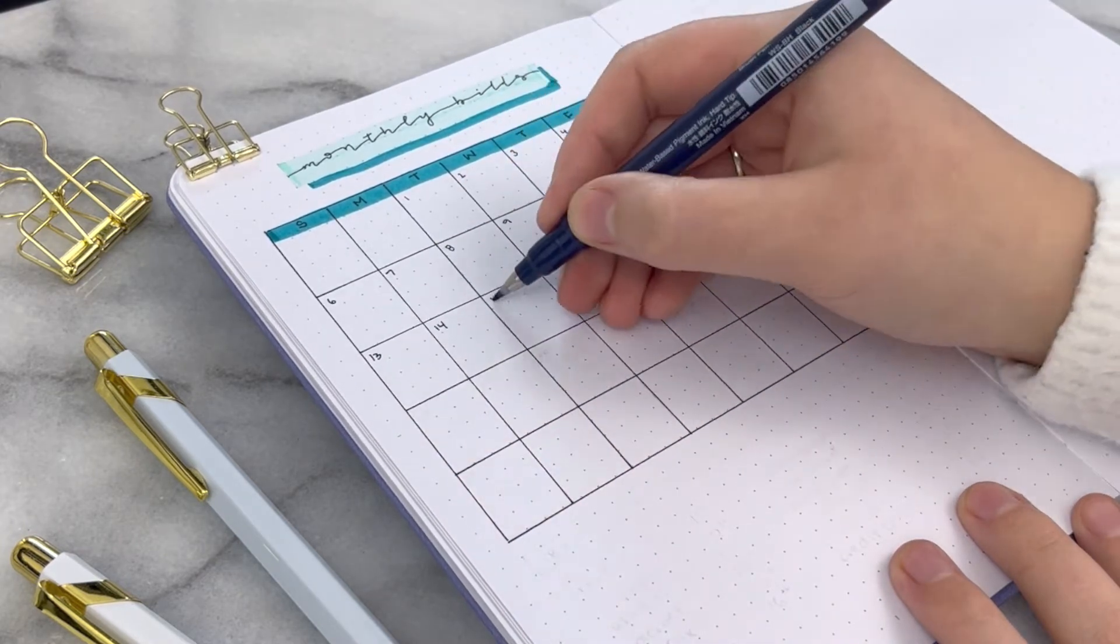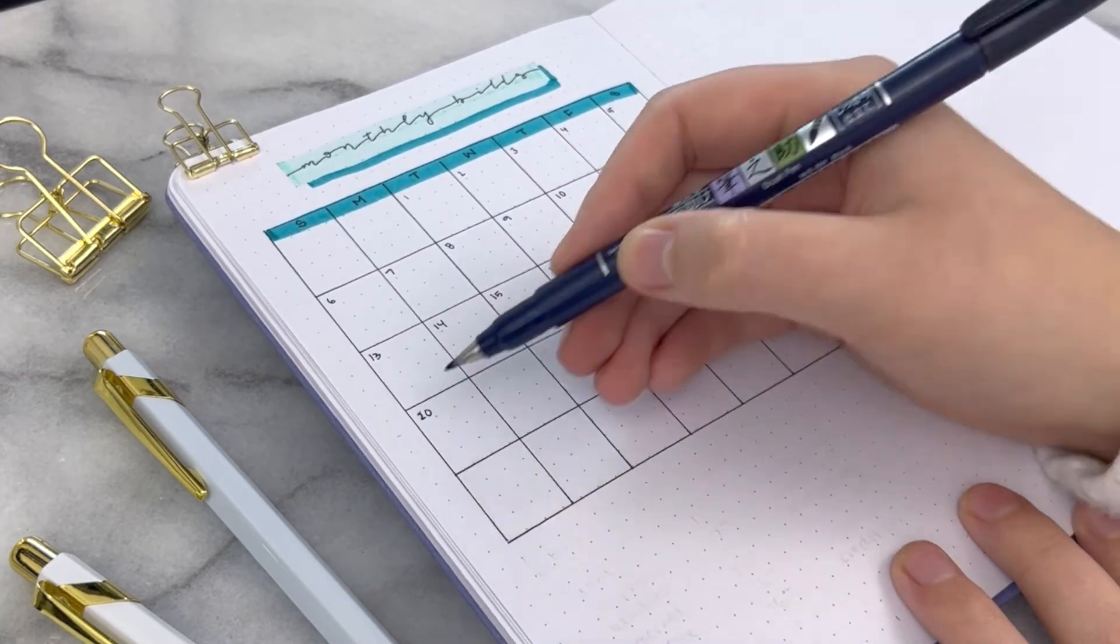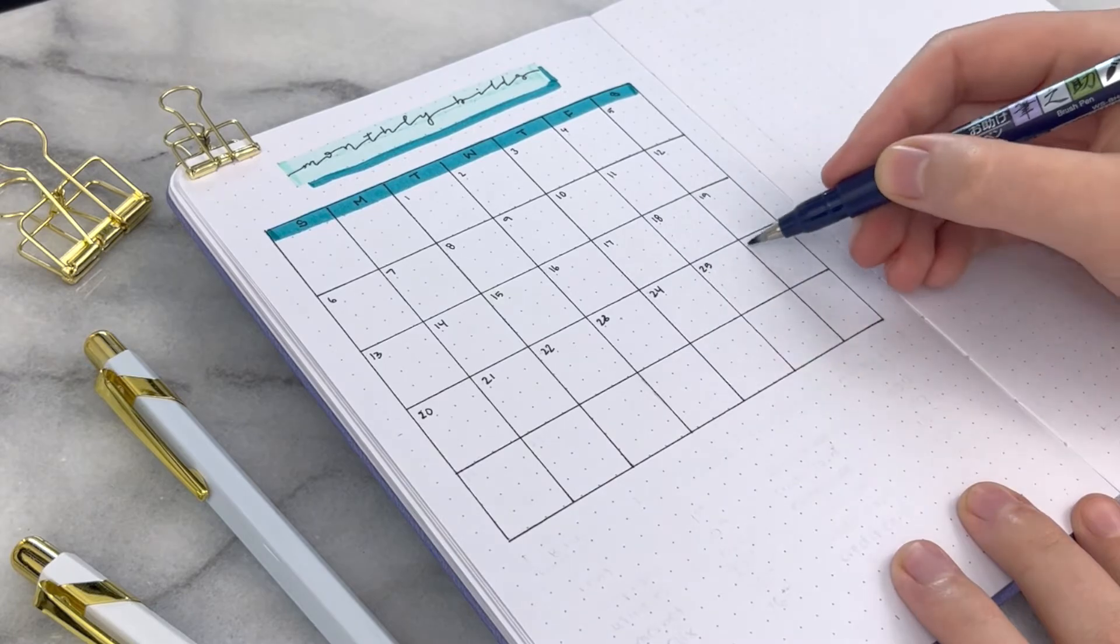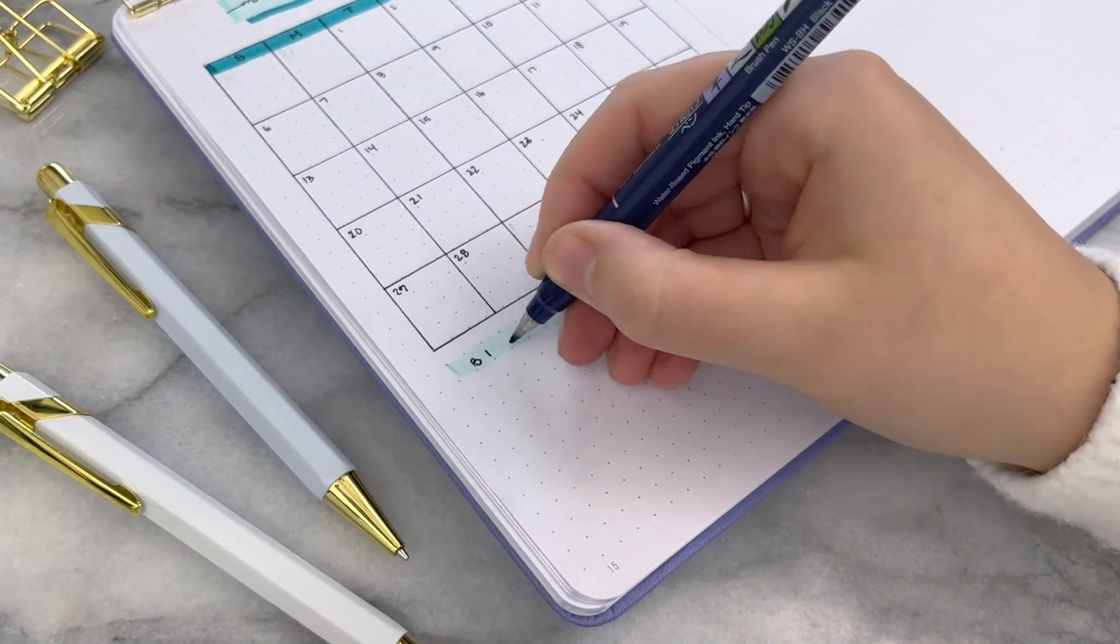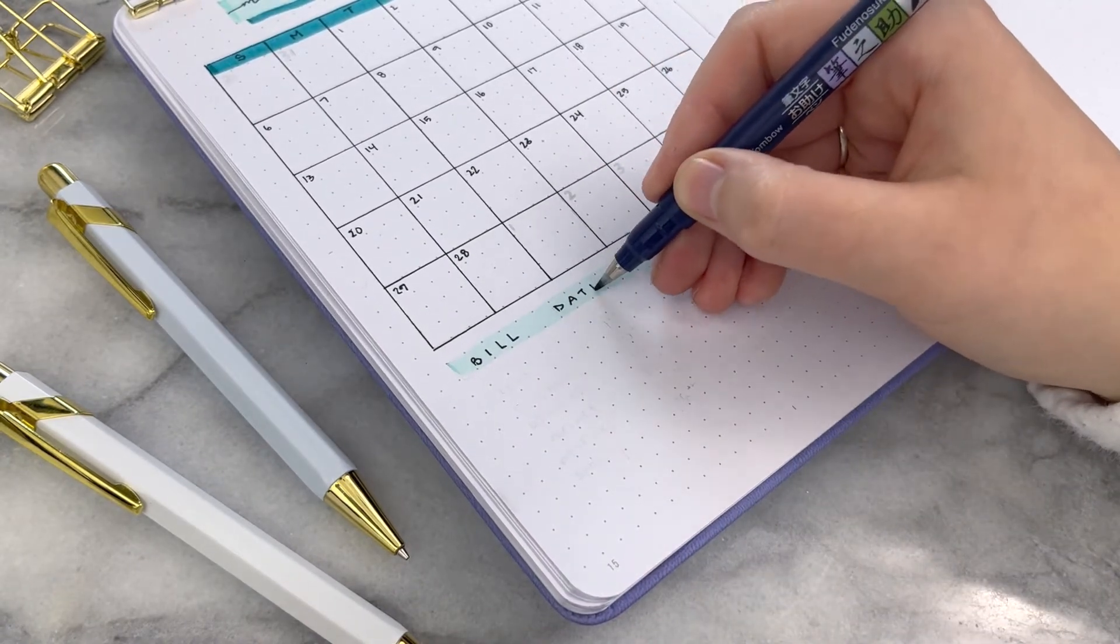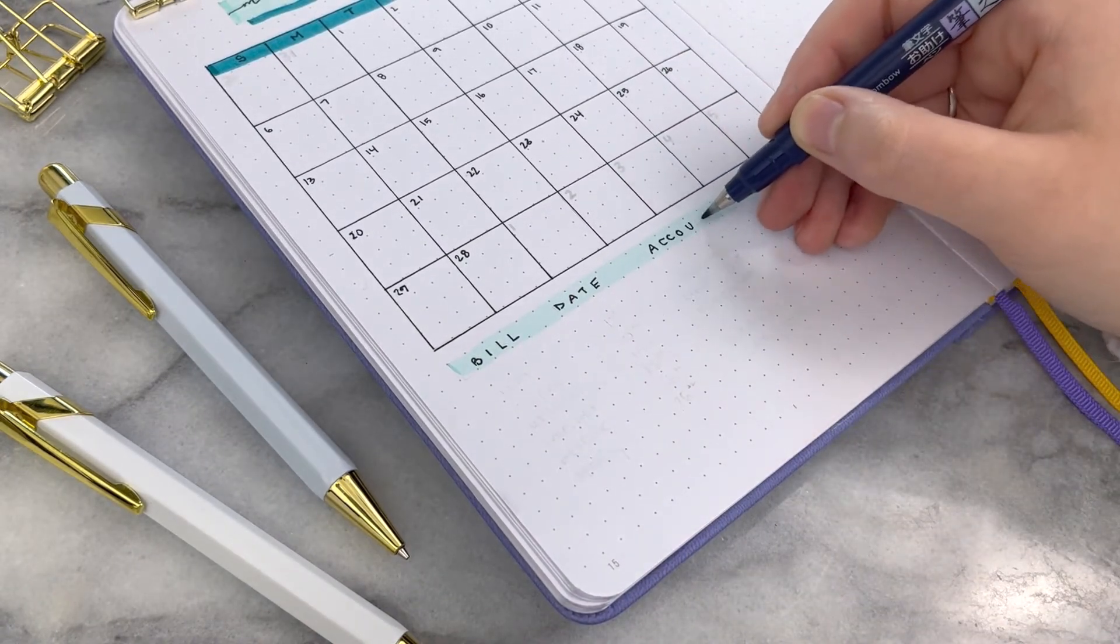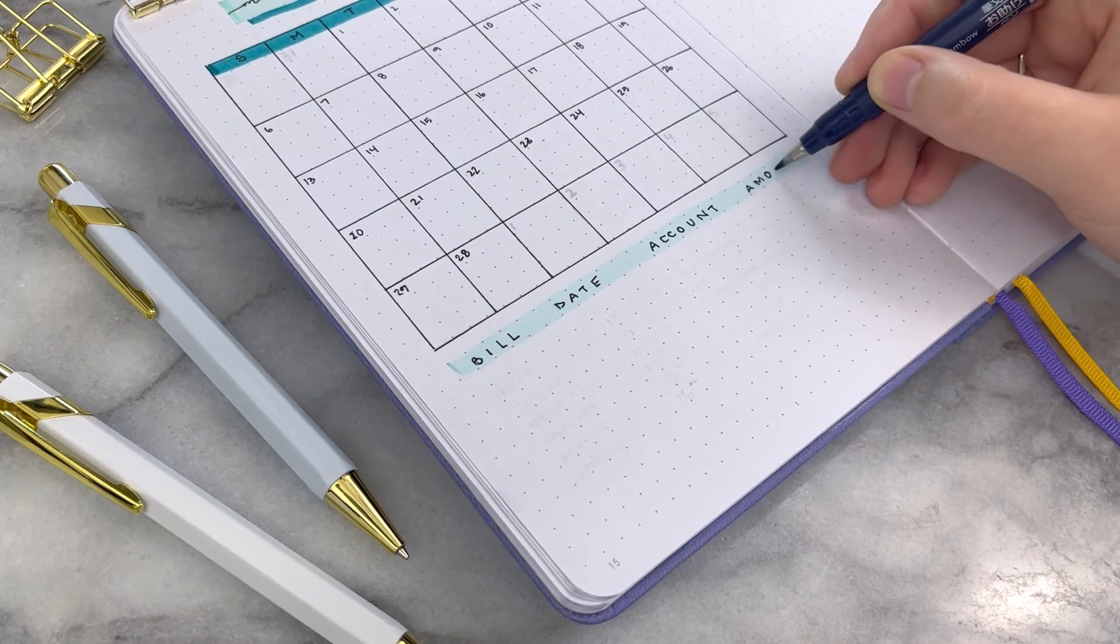If a bill is missed, you do end up paying things like late fees or let's say you have your credit card and you don't pay your credit card off right away, you're paying interest for those late charges. At the bottom, I just ended up breaking it down to be bills, date, the account that it's coming out of and then the amount.